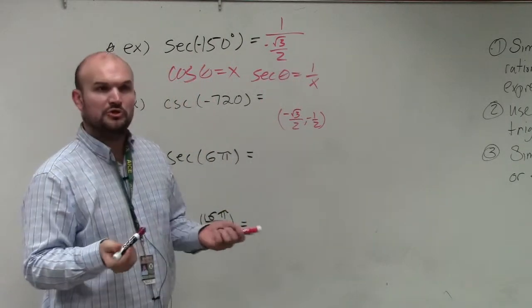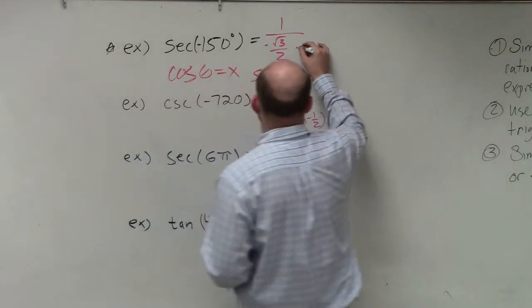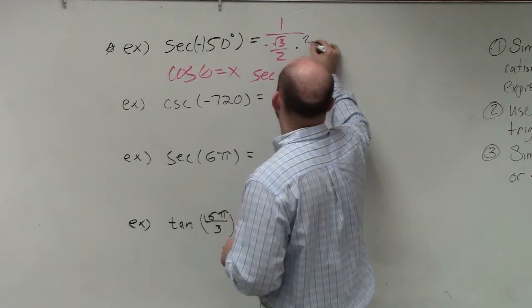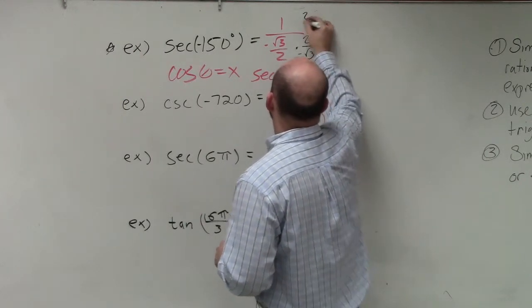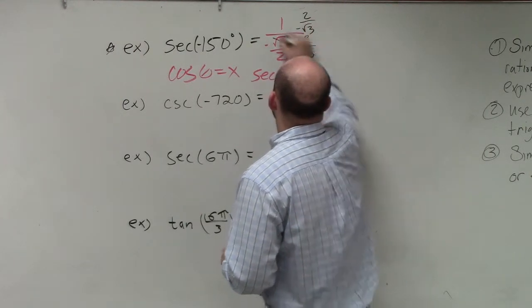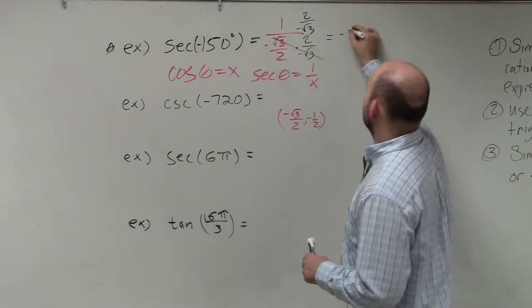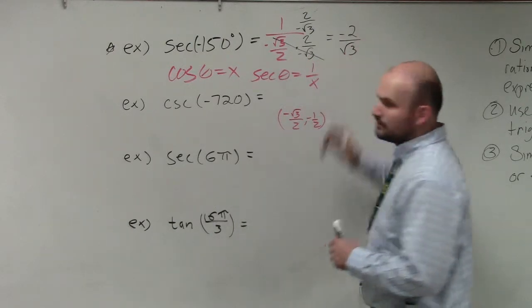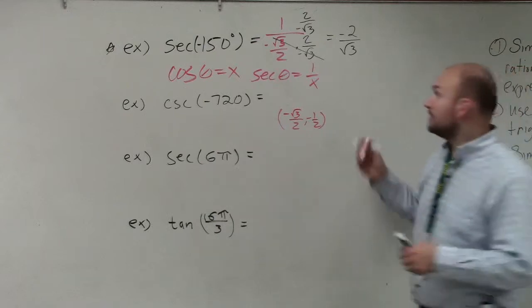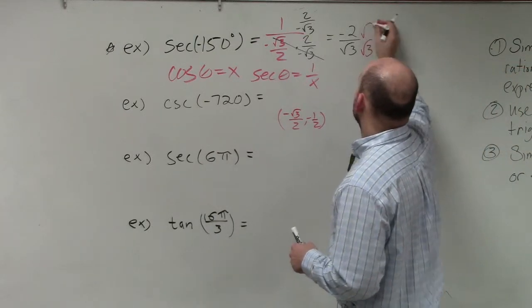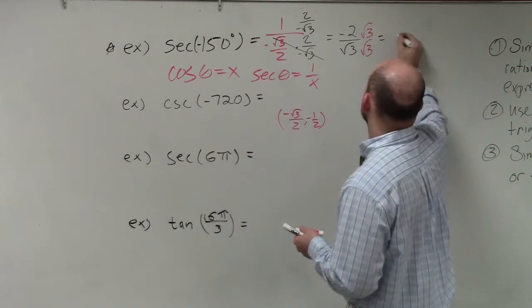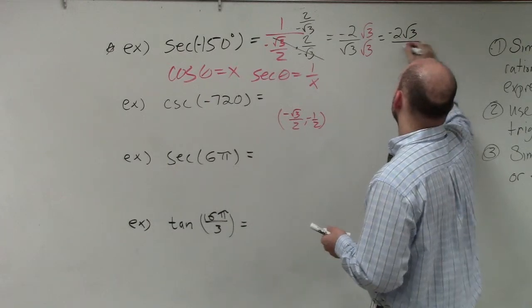How do you simplify these? You multiply by the reciprocal. That multiplies out. You're left with negative 2 over the square root of 3. We always rationalize the denominator. Square root of 3 over square root of 3. My final answer is negative 2 square root of 3 over 3.